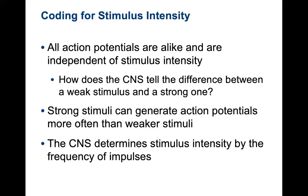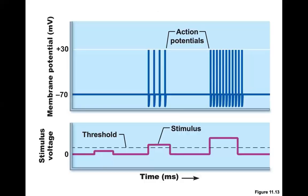How does the central nervous system distinguish between a weak and a strong stimulus? Not by the intensity of the action potential. Looking at the graph, we see a subthreshold stimulus with no action potentials, a threshold stimulus that crosses threshold producing four action potentials, and a stronger stimulus. The way this comes across in the central nervous system is not by intensity of the action potential, but rather by how many action potentials are being fired within a period of time — that's what establishes how intense the signal is.